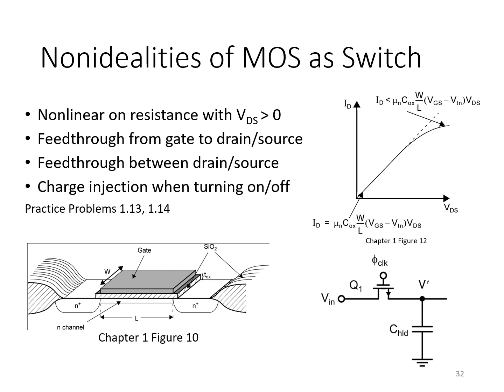Finally, anytime we turn the transistor on or off, the charge in the inverted channel region needs to either be supplied when turning on or taken away when turning off. That channel charge has to go somewhere — it typically flows to the source and drain regions, and this effect is called charge injection. You can estimate how much charge is stored in the channel of a transistor of a given size from the transistor's parameters and voltages involved, and therefore determine the impact — for example, charge injected onto a capacitor will result in a change in voltage across that capacitor.